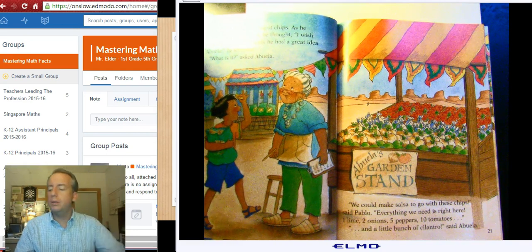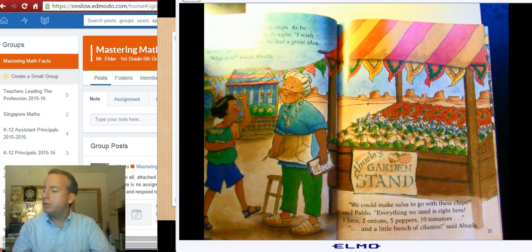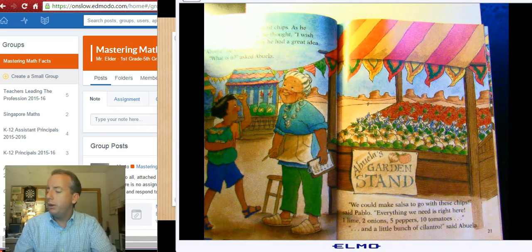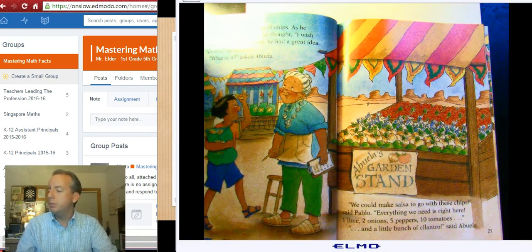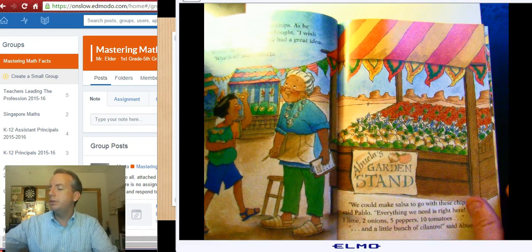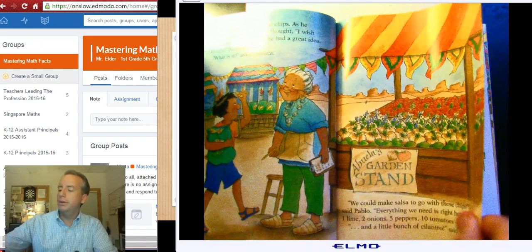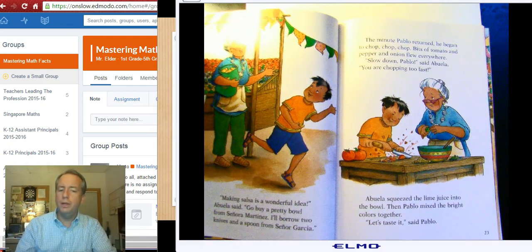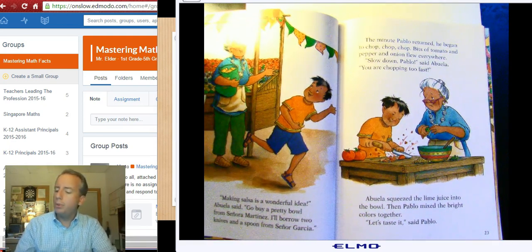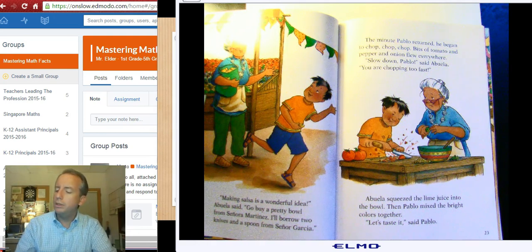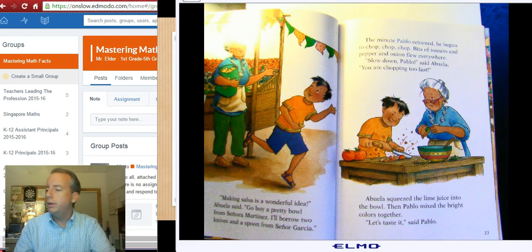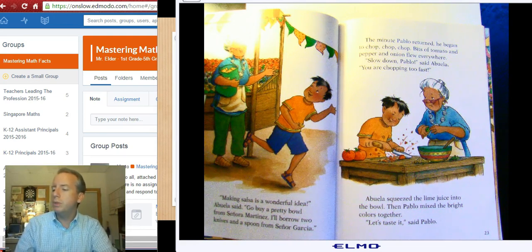Abuela, he shouted. What is it, asked Abuela. We can make salsa to go with these chips, said Pablo. Everything we need is right here. One line, two onions, five peppers, ten tomatoes. And a little bunch of cilantro, said Abuela. Making salsa is a wonderful idea, Abuela said. Go buy a pretty bowl from Senor Martinez. I'll borrow two knives and a spoon from Senor Garcia. The minute Pablo returned, he began to chop, chop, chop. Bits of tomato and pepper and onions flew everywhere.